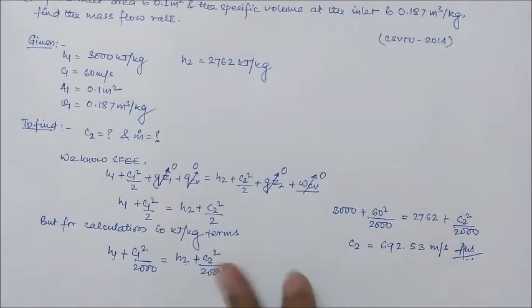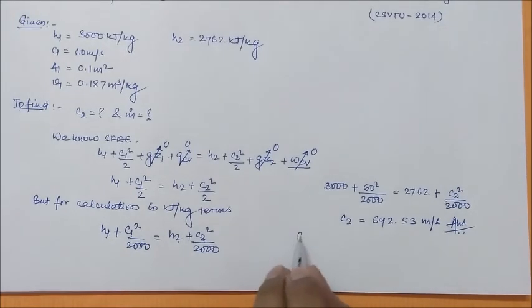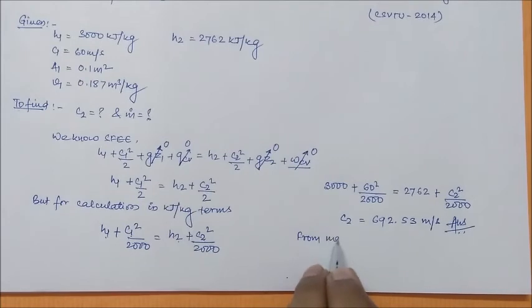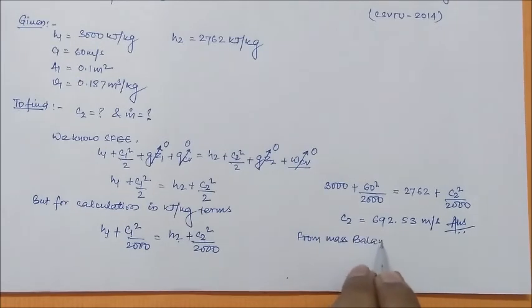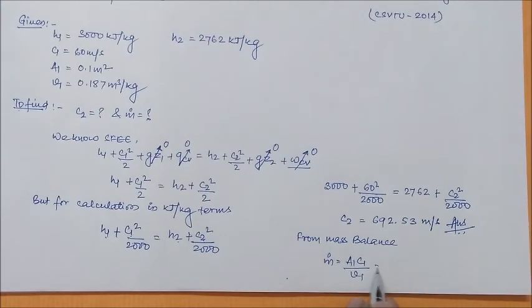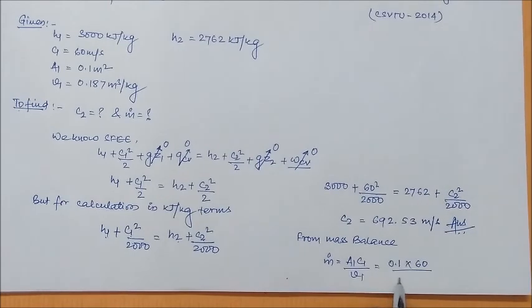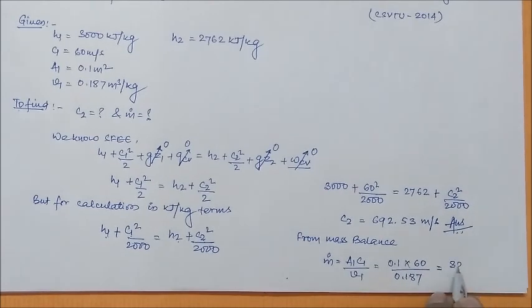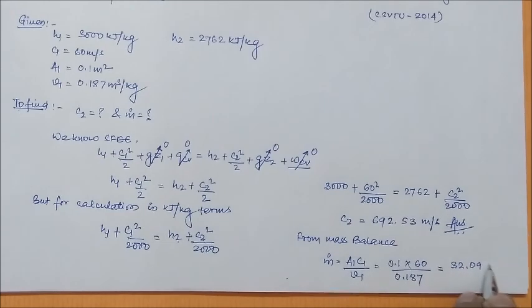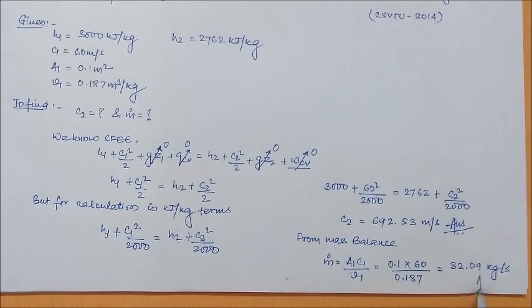Okay. Now, we got C2 also. So, the next thing is, from mass balance, M dot is equal to A1 C1 by V1, where A1 is given as 0.1, C1 is 60 and V1 is 0.187. So, our answer comes as 32.09 kg per second. This is your answer.